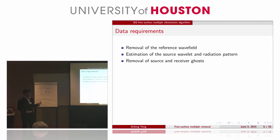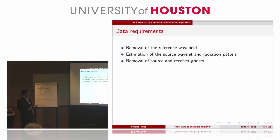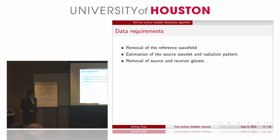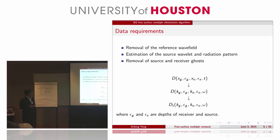Before talking about the algorithm, I want to show the data requirements. First, we need to remove the reference wavefield, and we also need to estimate the source wavelength of the source radiating pattern. And we also need to remove the source and receiver ghosts. After this specified processing, if our data has ghost data in the space and time domain, we need to forward transform this data to wavenumber and frequency domain. We call this data D1 as our input in the algorithm.